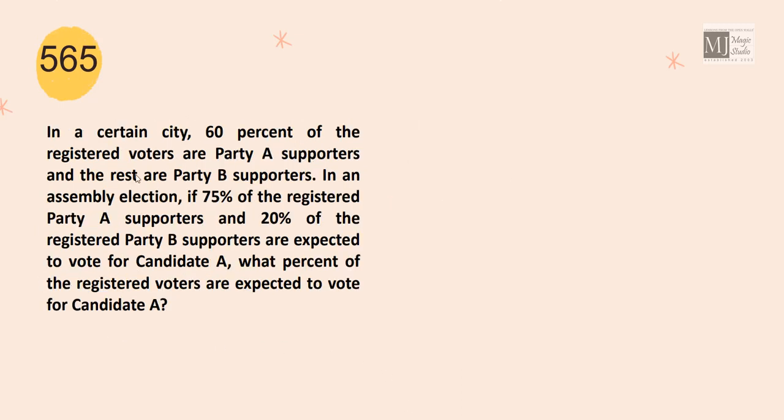In a certain city, 60% of the registered voters are party A supporters and the rest are party B supporters. In an assembly election, 75% of the registered party A supporters and 20% of the registered party B supporters are expected to vote for candidate A. What percent of the registered voters are expected to vote for candidate A?